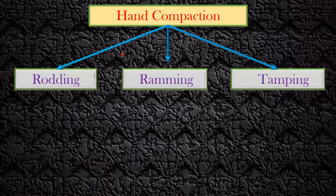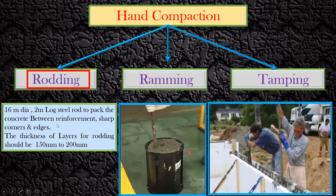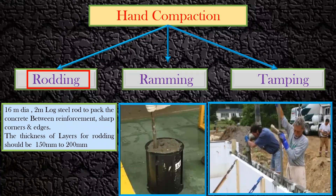Hand compaction is divided into three types: rodding, ramming, and tamping. In rodding, we make use of a 16 mm diameter, two-meter-long steel rod to pack the concrete between the reinforcement, sharp corners, and edges. The thickness of layers for rodding should be between 150 to 200 mm. This is typically used for casting cylinders in a concrete lab or for works of lesser importance.